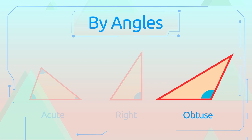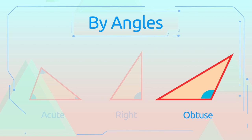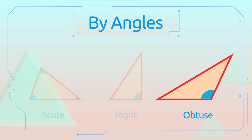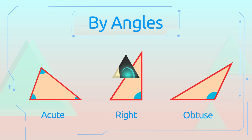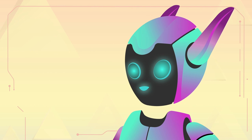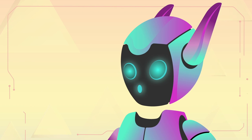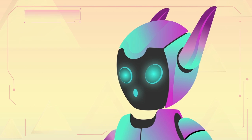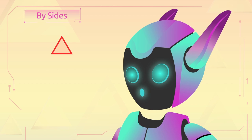And a triangle with one obtuse angle is called an obtuse triangle. Let's recap — classifying triangles depending on their sides.